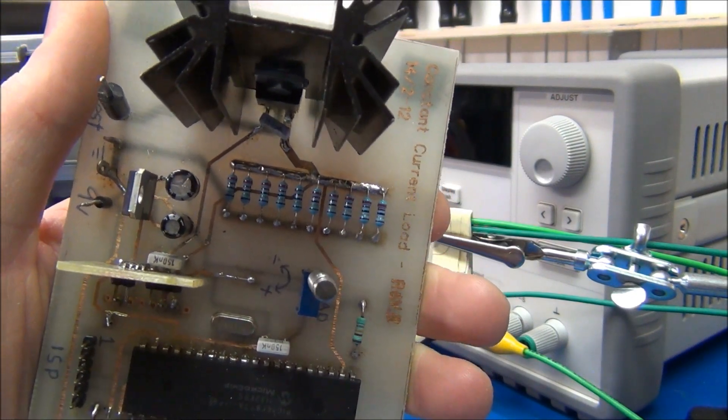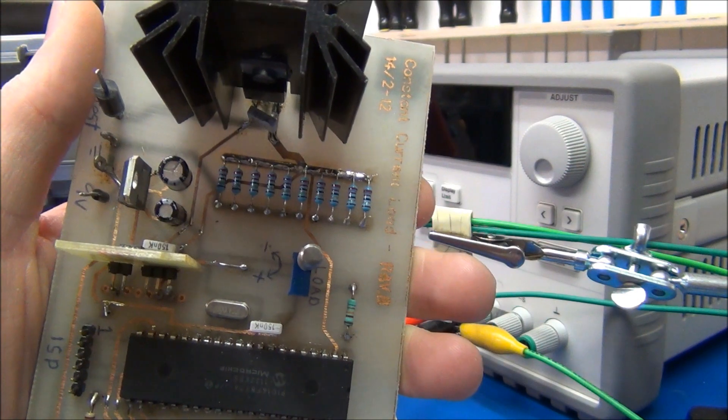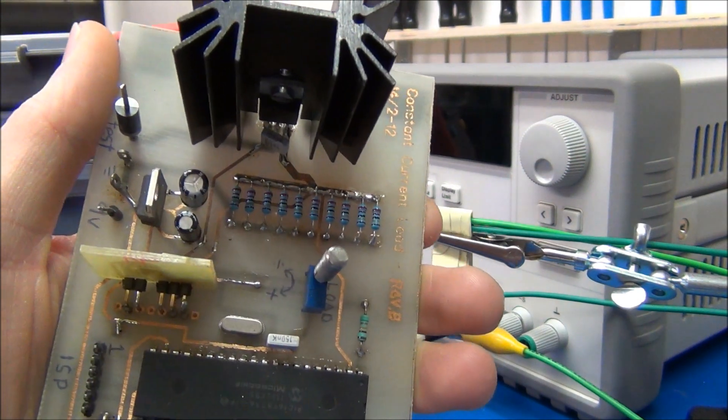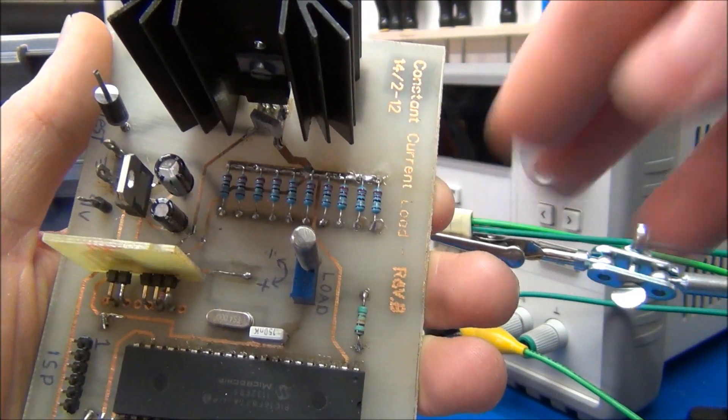So a while back I built this constant current load, but it's not as accurate as it should be, and I think these resistors are a problem.